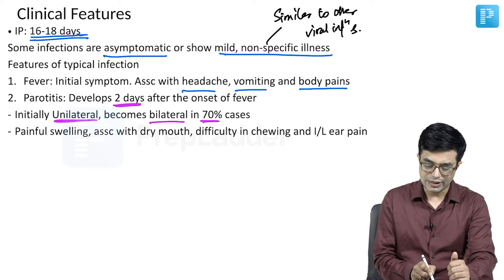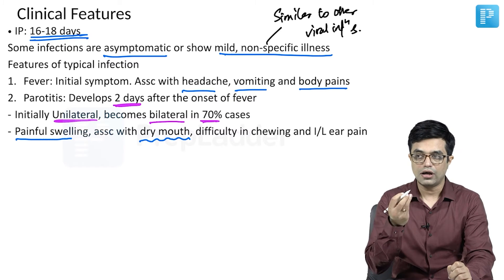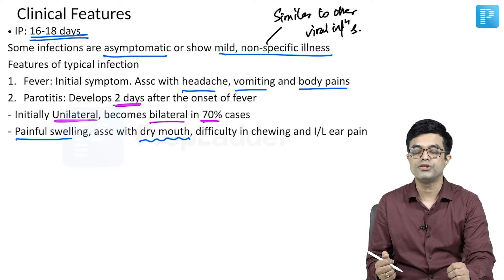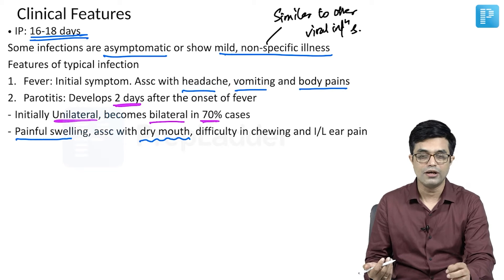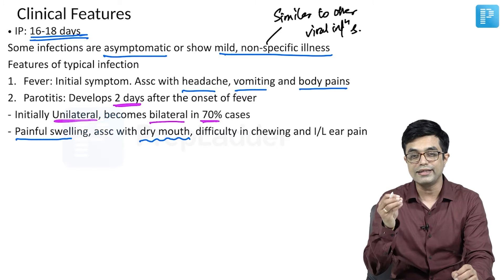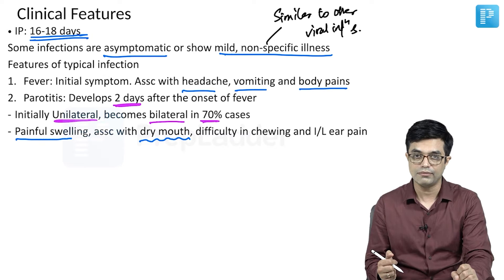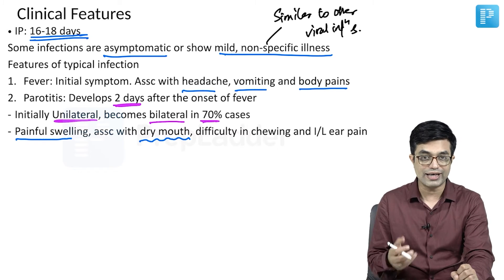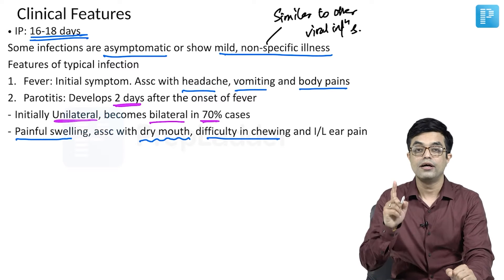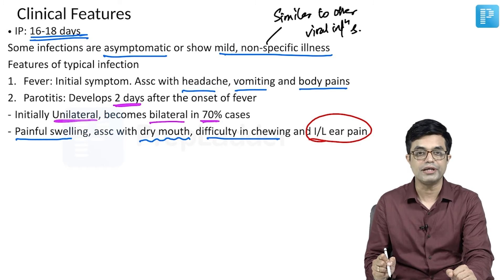The glands will show painful swelling. There will be dry mouth in the child because there is edema of Stensen's duct, so the saliva is not able to reach the oral cavity. Dry mouth happens because of multiple reasons — more specifically, there is edema and stenosis involving Stensen's duct, which is the major duct of the parotid gland. Because of dry mouth and developing swelling, there will be painful mastication — difficulty in chewing. Additionally, ipsilateral ear pain on the same side as the enlarging gland will also be characteristic.